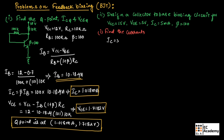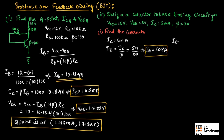IC is given as 5 milli ampere. We can find IB as IC divided by beta, which is 5 milli ampere divided by 100, giving IB equal to 50 micro ampere. We can write IE equal to IB plus IC, which is 50 micro ampere plus 5 milli ampere, giving IE equal to 5.050 milli amperes.